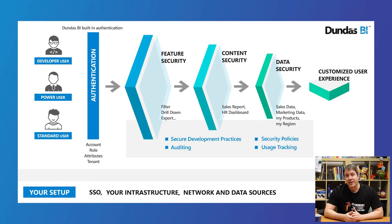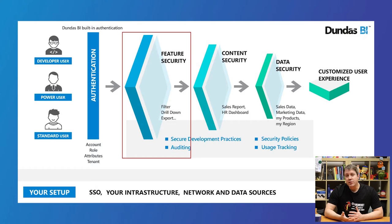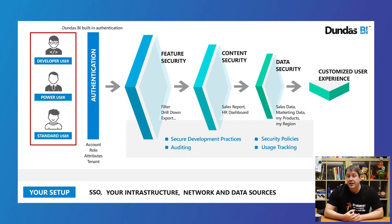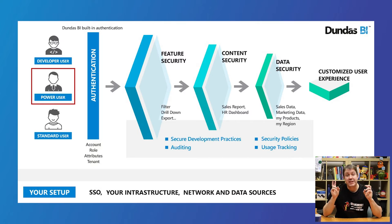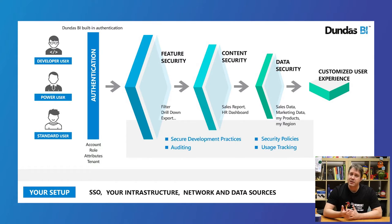Now the next area of this diagram is feature security. Users in Dundas BI are divided into three different seat types that allow for certain access to the application. At the top, you've got developers, who are the most privileged users and can basically do anything within the application. Power users are like a developer lite — these users are usually reserved for people interested in performing self-service functions, while being kept out of more technical parts of the application. And finally, you've got standard users, which are typically used to interact with views such as dashboards, reports, or even slideshows. They can filter, they can drill down, etc. This is most commonly used for consumption.